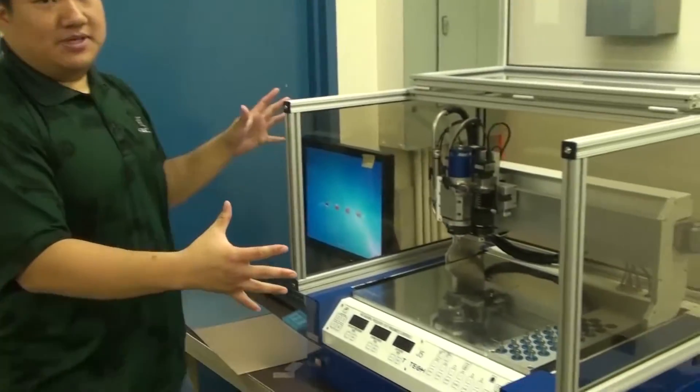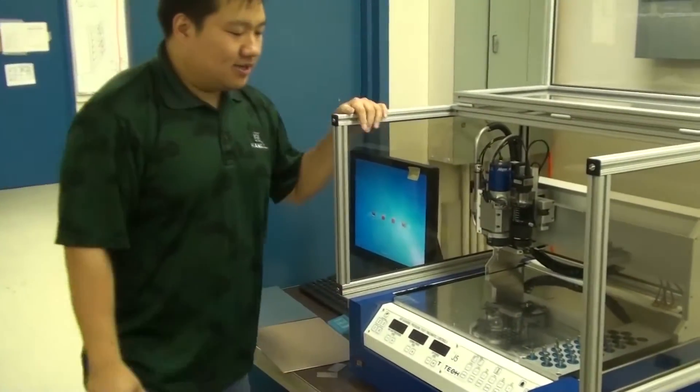So first, we'll go over the different parts of the system. Right here is the centerpiece of the system. It's the circuit board milling machine.